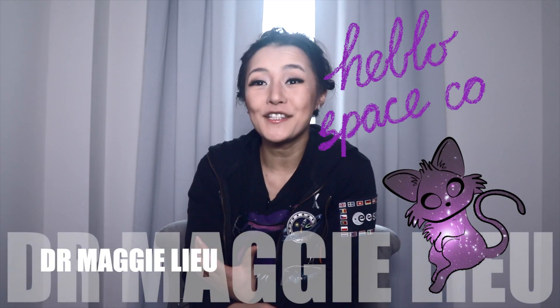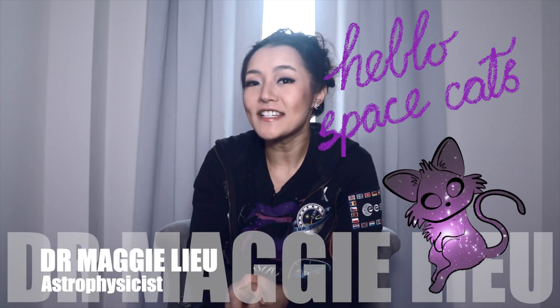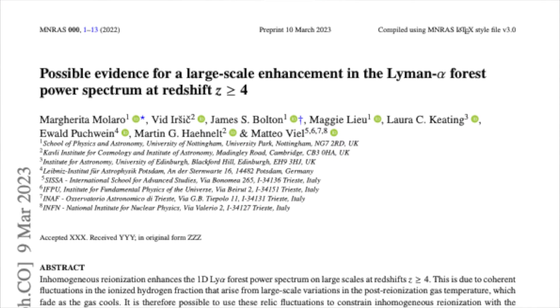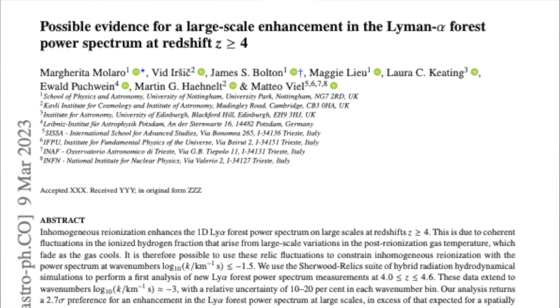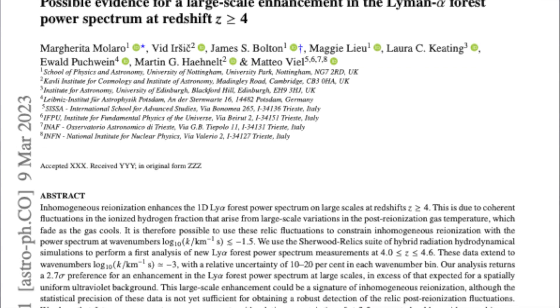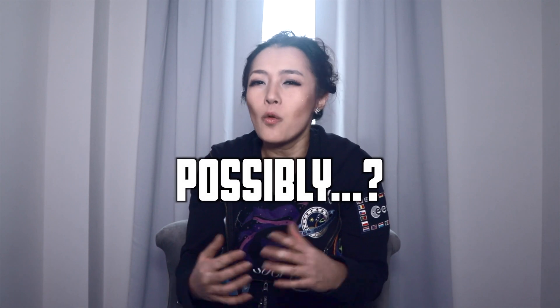Hi Space Cats, I'm Dr. Maggie Lu, welcome back to my channel. This week, some research that I was involved in was published. It was called 'Possible Evidence for a Large-Scale Enhancement in the Lyman-Alpha Forest Power Spectrum at Redshift Greater or Equal than 4.' It's a study where we looked at the Lyman-Alpha Forest for signs of inhomogeneous reionisation. The answer was a possibly, but what exactly does all that mean? Let's find out.